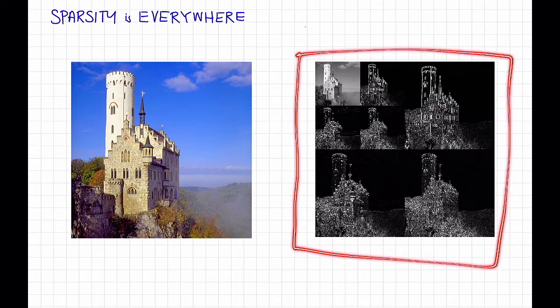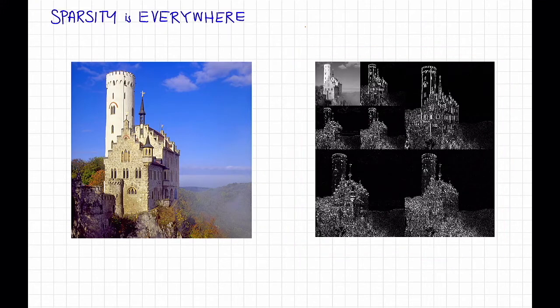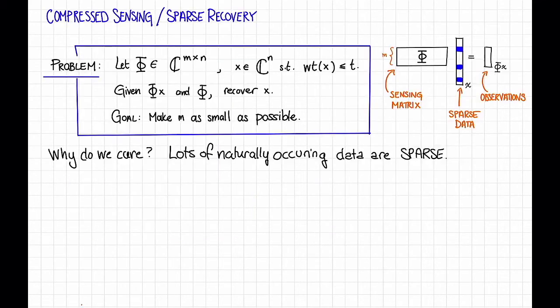And you note that this thing is sparse. That is, most of the pixels are black or approximately zero. Similarly, lots of other naturally occurring signals, for example, audio data, are sparse when you put them in the right basis.